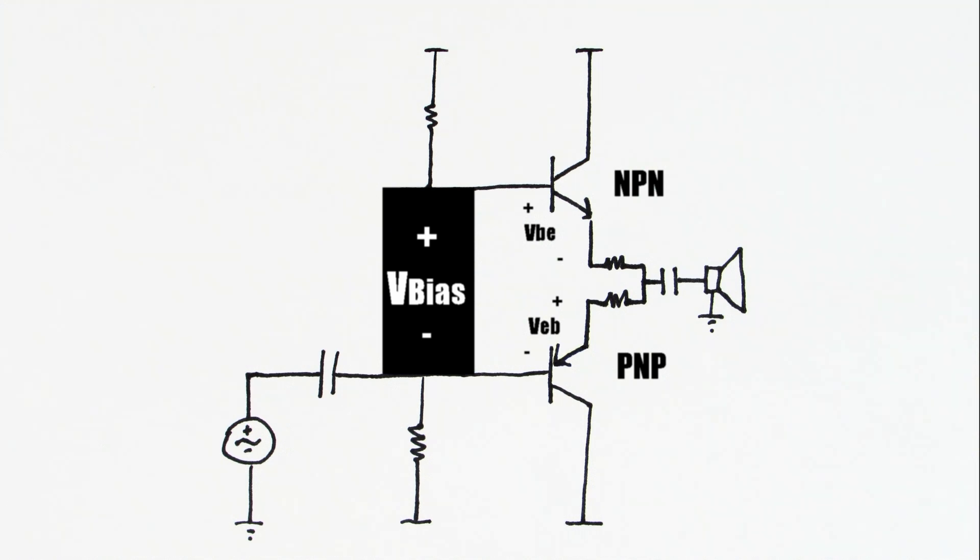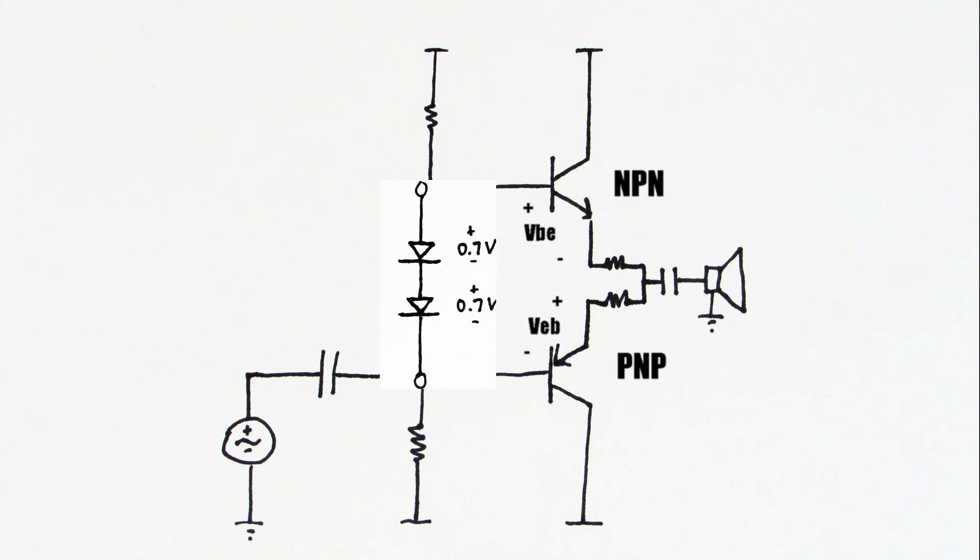One strategy could be to use diodes. These diodes have a fixed voltage drop that's going to be very close to the base emitter voltages of these transistors.